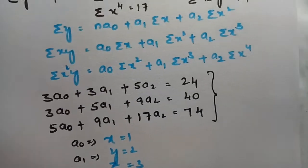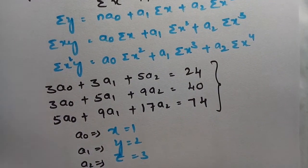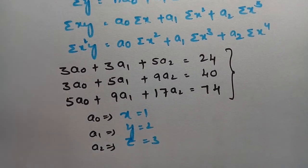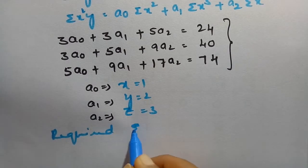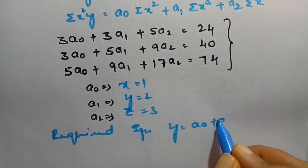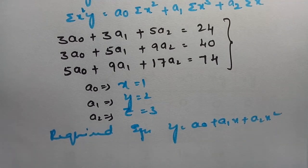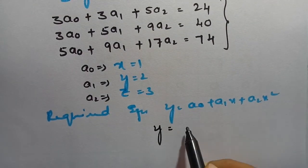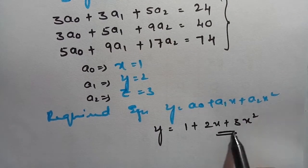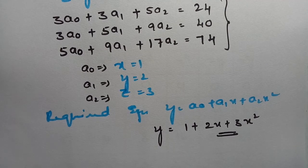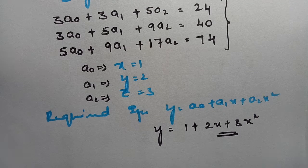Therefore, to fit a polynomial of second degree, the required equation is y = a₀ + a₁x + a₂x². Substituting the values: y = 1 + 2x + 3x². This is the answer. Using a calculator, you can solve it easily. Thank you for watching — practice and benefit from these videos. Stay connected.